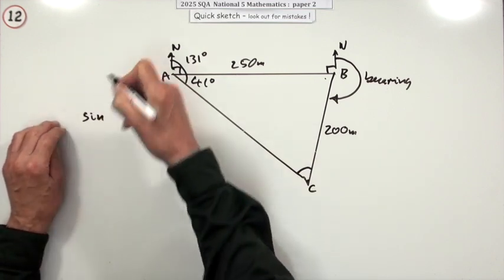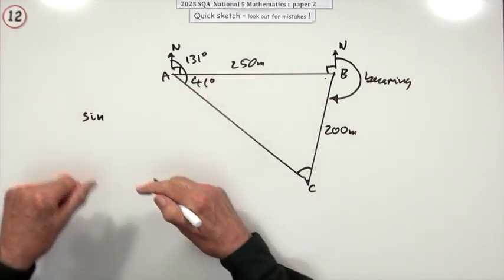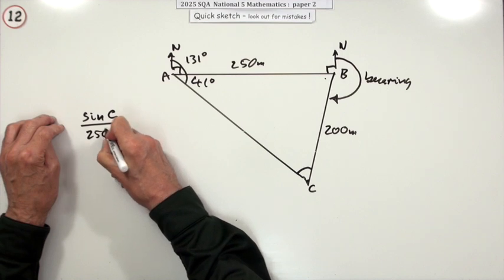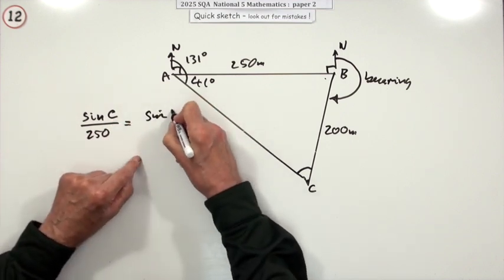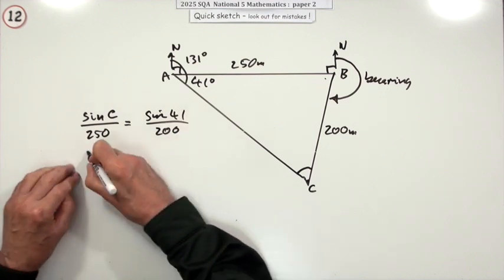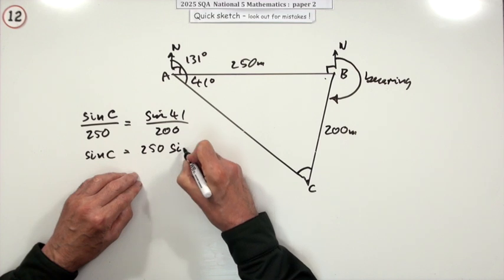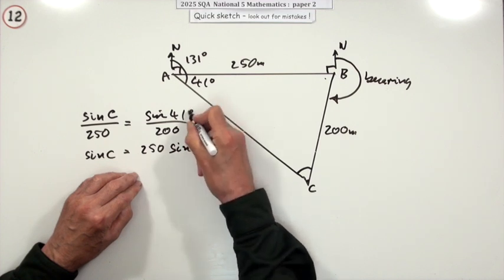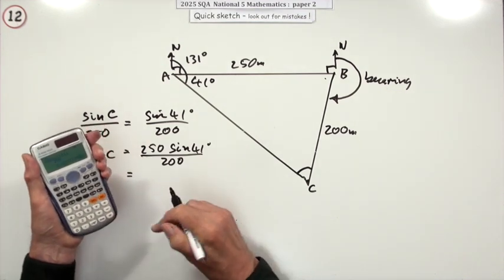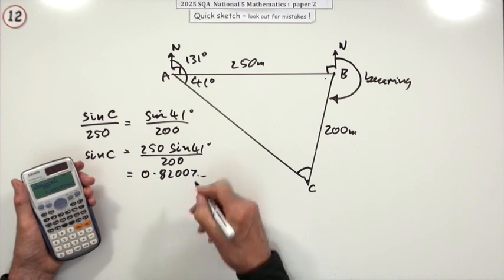So you've got the sine rule. Now I know it's a over sine a, b over sine b, c over sine c. But that also works if you invert them. So sine c over its partner will be the same as sine a over its partner. From that, I can get sine c is going to be 250 sine 41 over 200. Then press the button and you've got 0.82007.